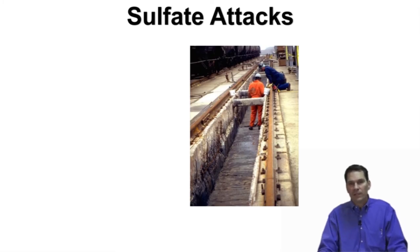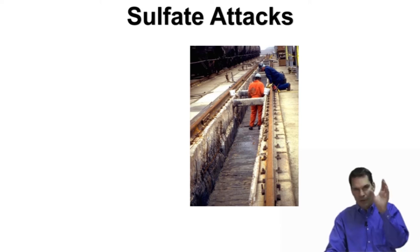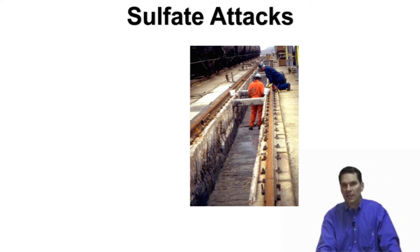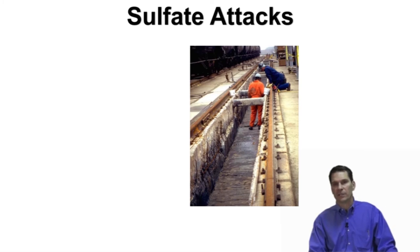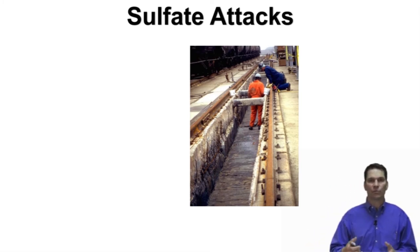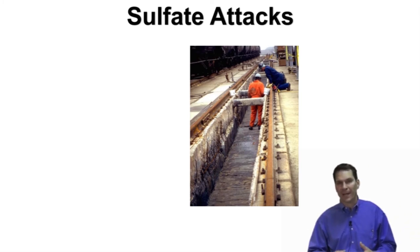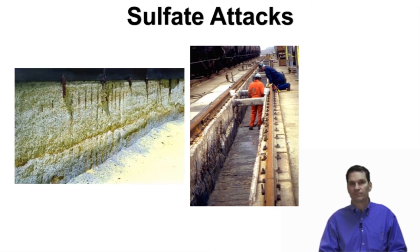Here you can see a sulfur trench where trains roll down the track and drop molten sulfur into this pit. You can see on the left side of the tank wall, it's completely disintegrated by the chemical reaction that creates the gypsum and ettringite that expands. Here is a close-up version showing the same exposure and the outward signs of that deterioration.